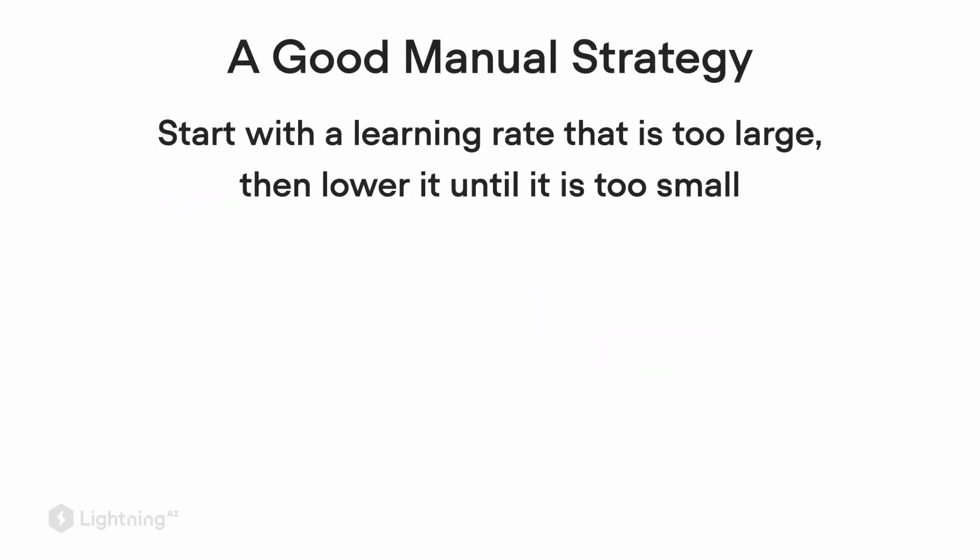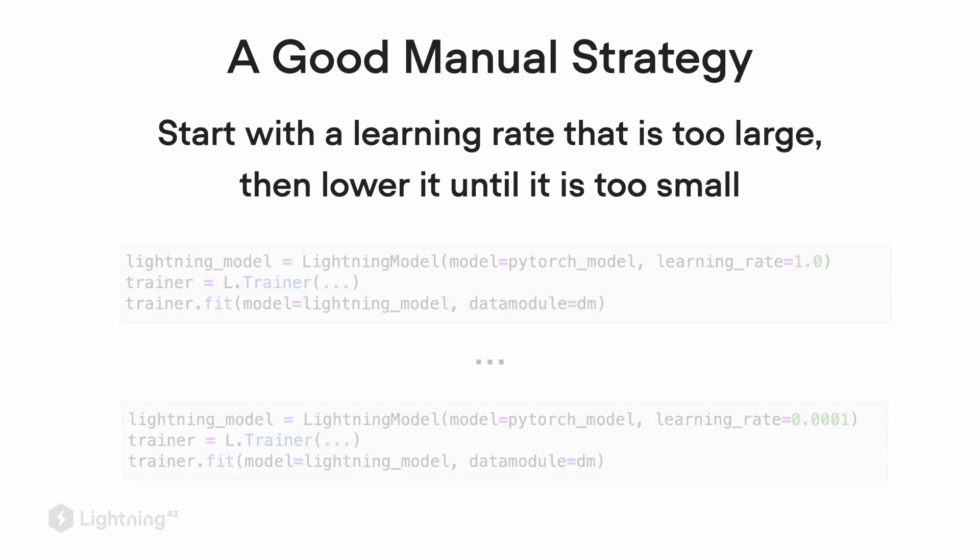How do we find a good learning rate? We mentioned previously, one way is to start with a learning rate that is slightly too large, where we jump around erratically, and then lower the learning rate until it is too small. And our good learning rate would be something in between. Luckily, the way we set up our lightning module earlier, it's pretty easy to change the learning rate so that we can run some experiments.